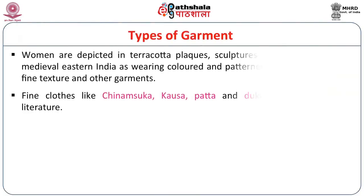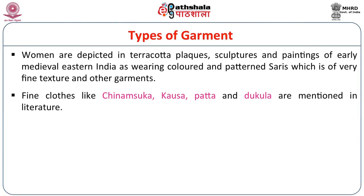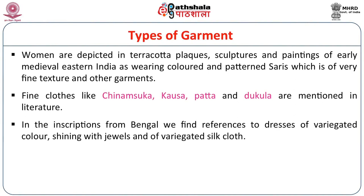When you look at a sculptural piece, the motifs become very evident and the drapery is completely diaphanous, so that you can see the body — which means it is a very fine cloth. Therefore, fine cloths like chinangshuka, kosha, patta and dhukula are mentioned in literature, and literature and sculpture go hand in hand. In the inscriptions from Bengal, we find references to dresses of variegated colors, shining with jewels and a variegated slick silk cloth.